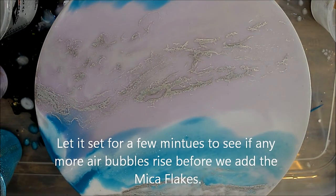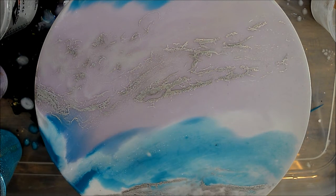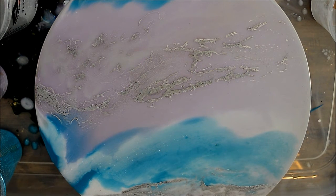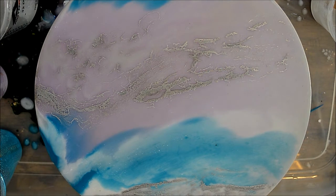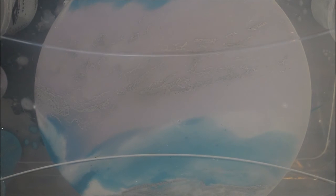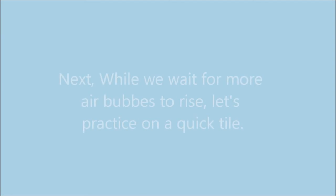We'll give it a few more minutes to see if any more air bubbles arise before we add the mica flakes, because you really can't torch it after you do that. You can see how faded my purple has gotten now. Just go ahead and cover this and give it a few seconds to set a little bit, and we'll add those mica flakes next.